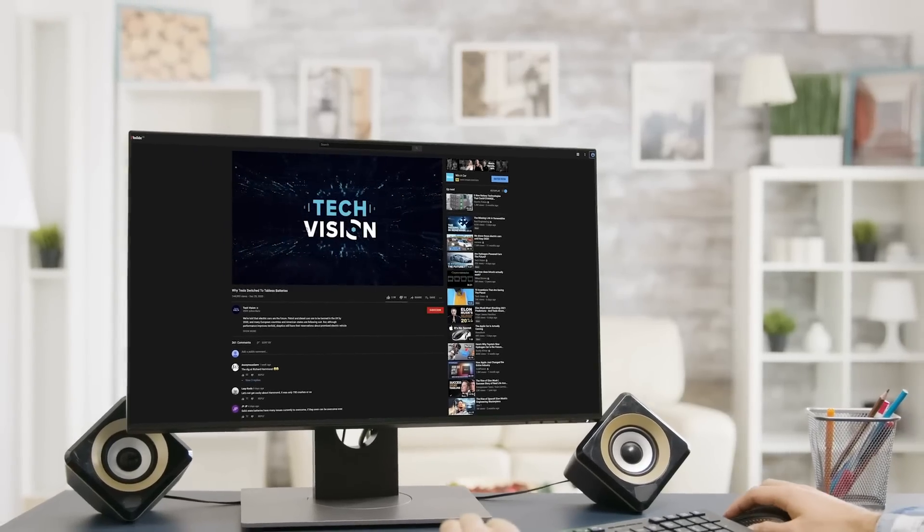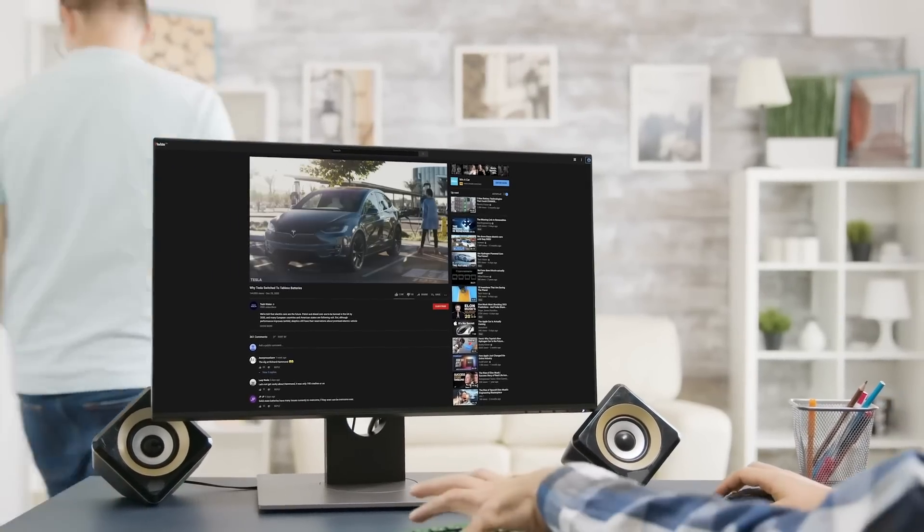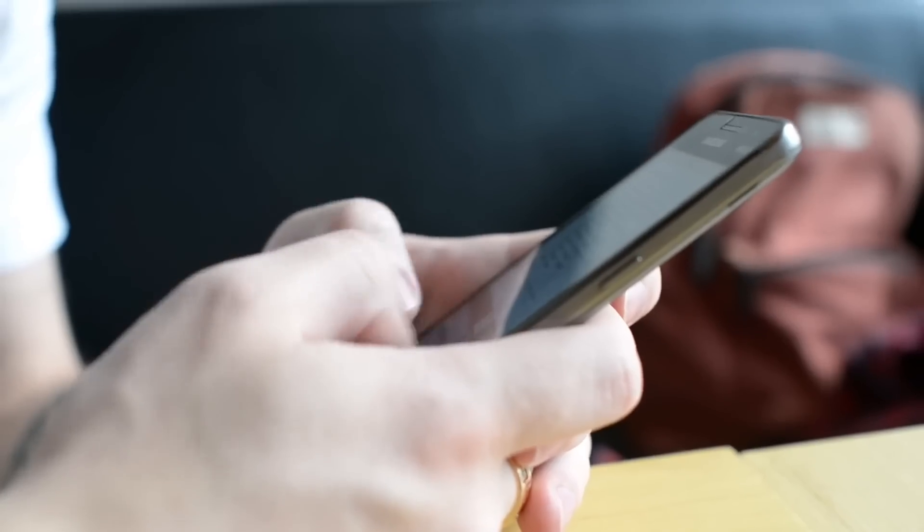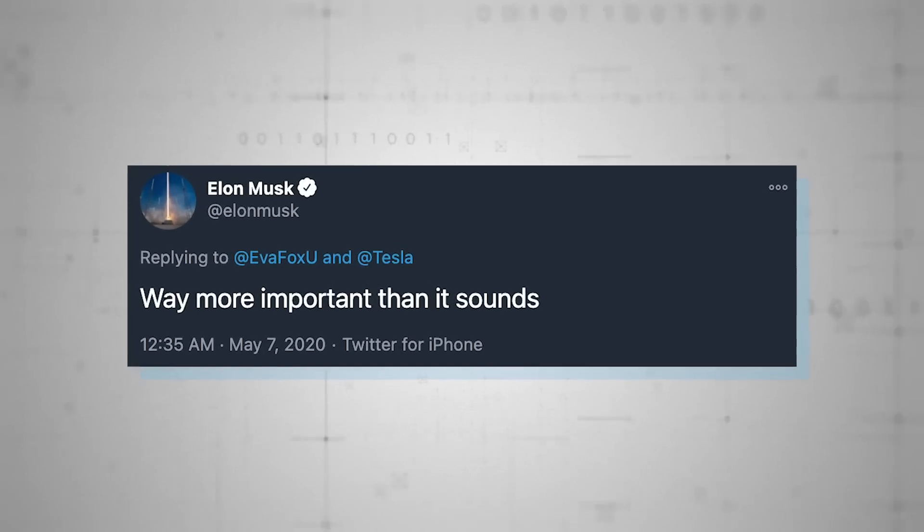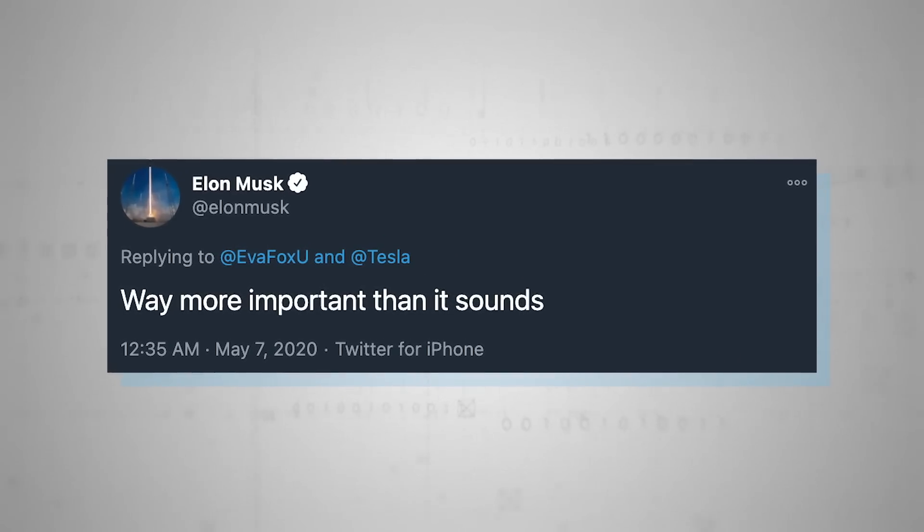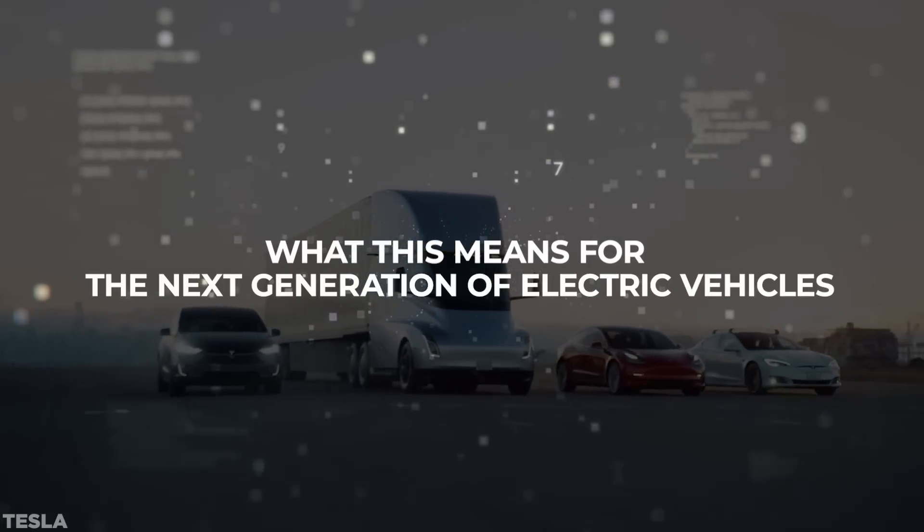But that's not why you clicked on this video. You clicked on this video because you were interested in the new tabless battery design, which had a patent filed for it in early 2020, something which Musk highlights is way more important than it sounds in a tweet dated May 7th, 2020. Don't take his word for it. Let's delve into this together to understand what this means for the next generation of electric vehicles.